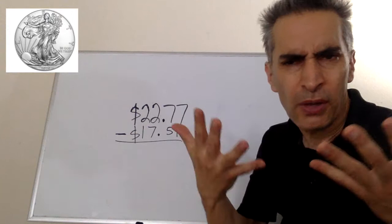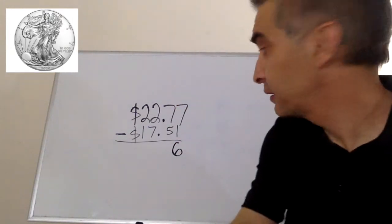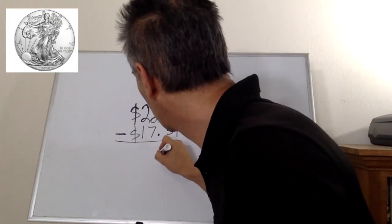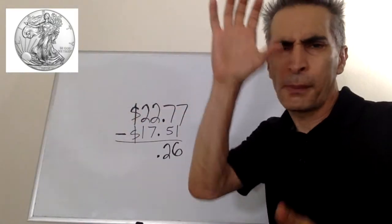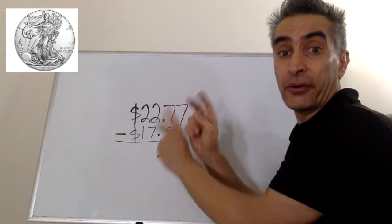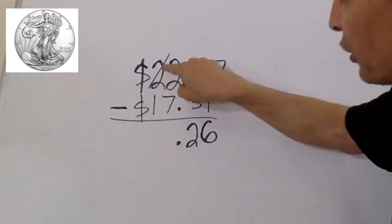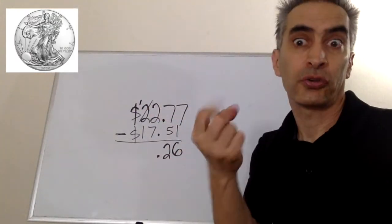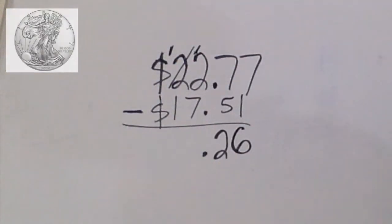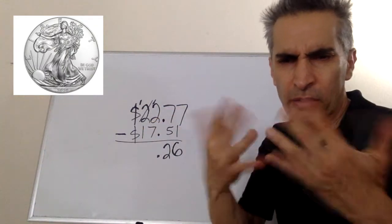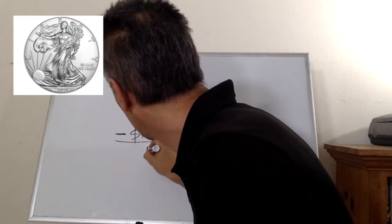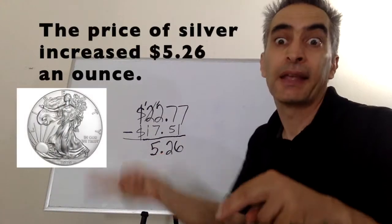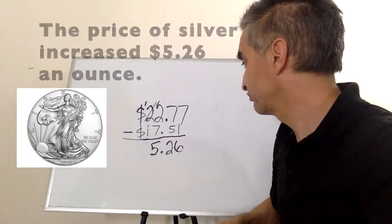7 minus 1 equals 6. 7 minus 5 equals 2. 2 minus 7 — we can't do that, so we're going to have to borrow. Now 12 minus 7 equals 5. 1 minus 1 is 0. So the price of silver increased $5.26 an ounce.